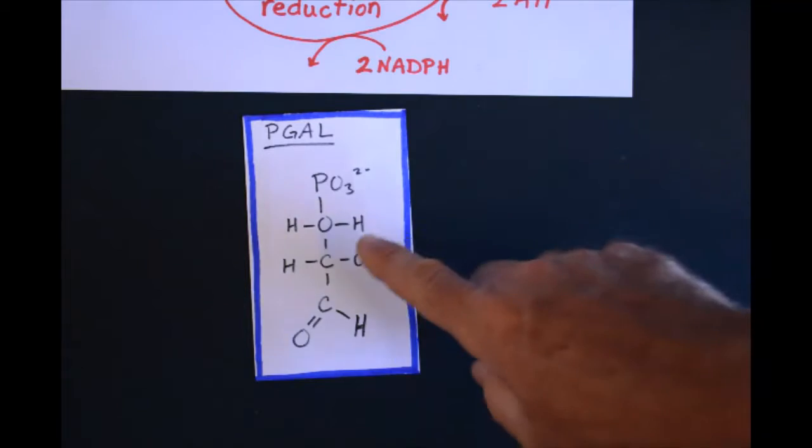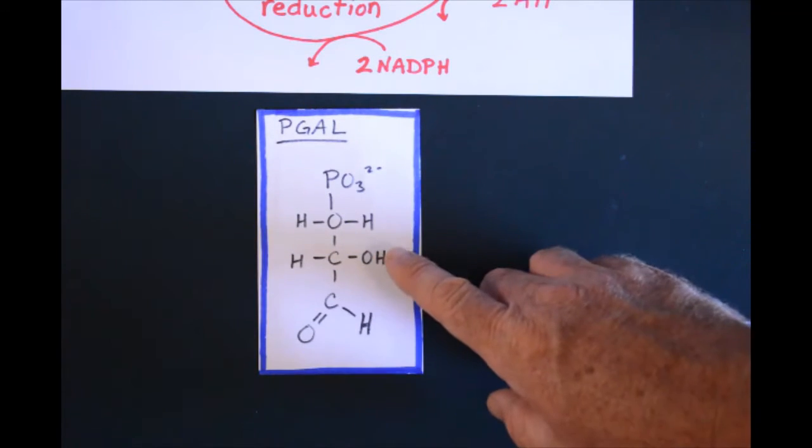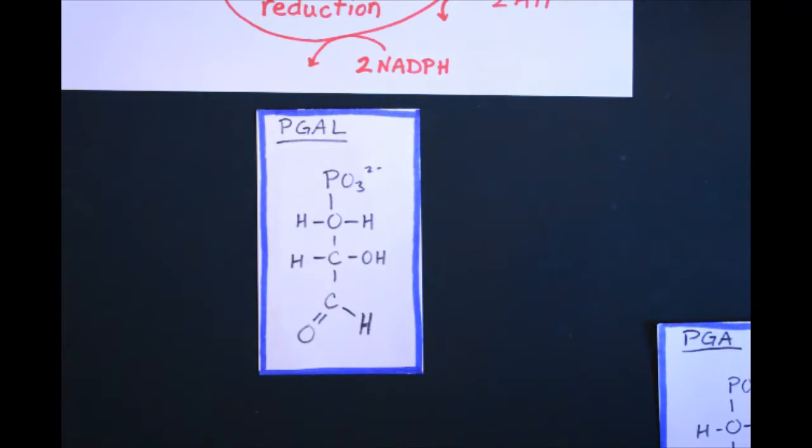In fact, phosphoglyceraldehyde is the main product of photosynthesis. That can then be used to make amino acids or glucose if you put a couple of these together.